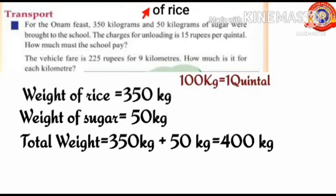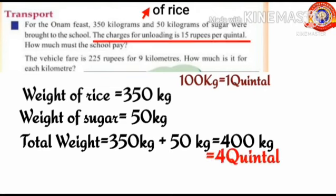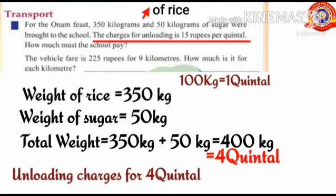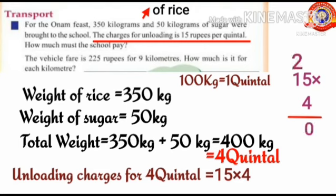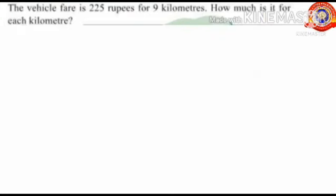The charges for unloading are 15 rupees per quindle. To find the unloading charges for four quindles, multiply 15 and 4. Five into 4 is 20 — write 0 in the ones place and carry 2. One into 4 is 4, plus 2 is 6. So the unloading charges for four quindles equals 60 rupees. The school must pay 60 rupees.